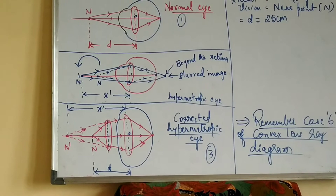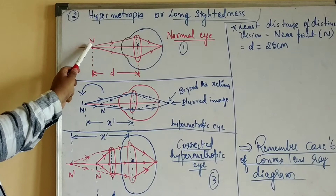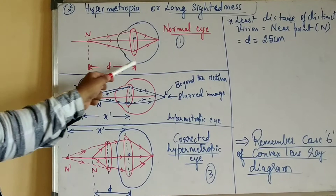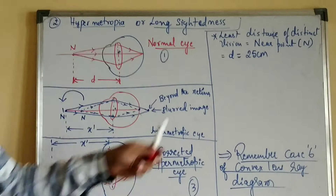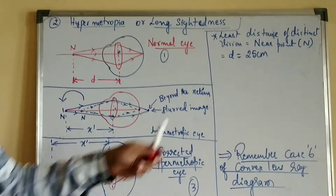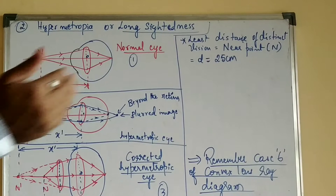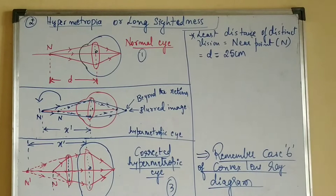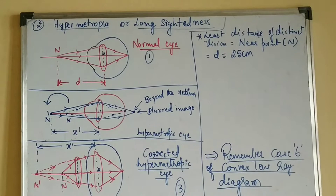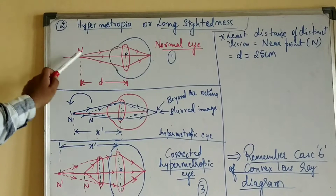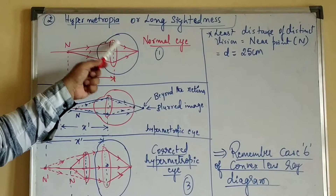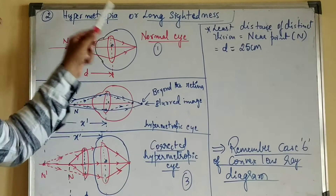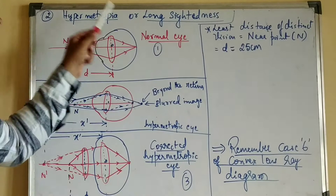For a normal eye, capital N is the near point, also called the least distance of distinct vision. The least distance of distinct vision, small d, equals 25 centimetres — that is the threshold at which we are able to see things clearly. For a normal eye, the converged rays fall exactly on the retina, meaning the image is formed on the retina.